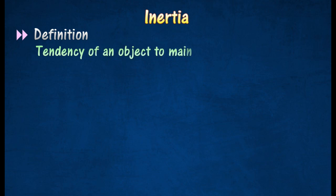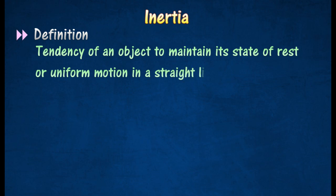Inertia is the tendency of an object to maintain its state of rest, or uniform motion in a straight line unless it's acted upon by an external force.